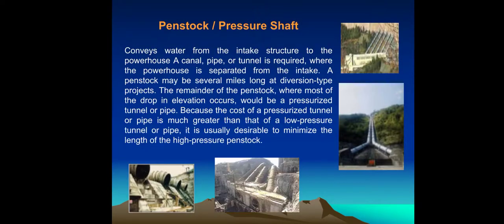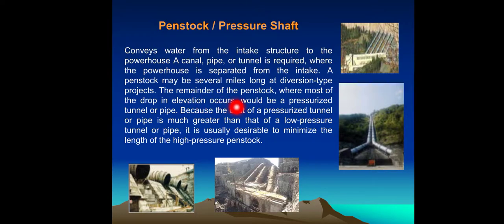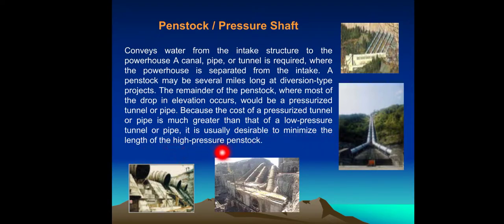Penstock pressure shafts convey the water from the intake structure to the powerhouse. A canal, pipe, or tunnel is required where the powerhouse is separated from the intake. A penstock may be several miles long at a diversion-type project. The remainder of the penstock, where most of the pressure drop occurs, would be a pressurized tunnel or pipe. Because the cost of a pressurized tunnel or pipe is much greater than that of a lower-pressure tunnel or pipe, it is usually desirable to minimize the length of the high-pressure penstock.